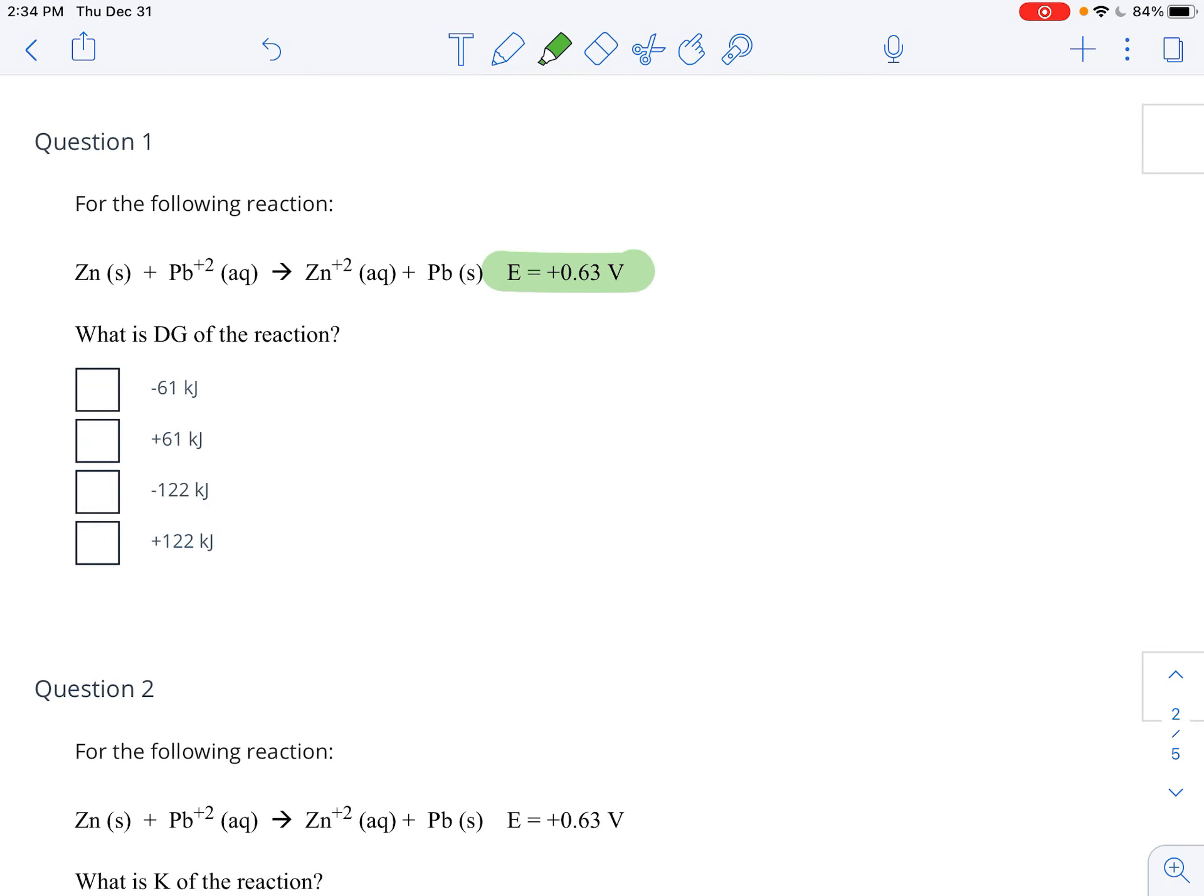So here in question one, they are giving you E, and they want G. So this is simple. This is delta G is equal to negative nFE.